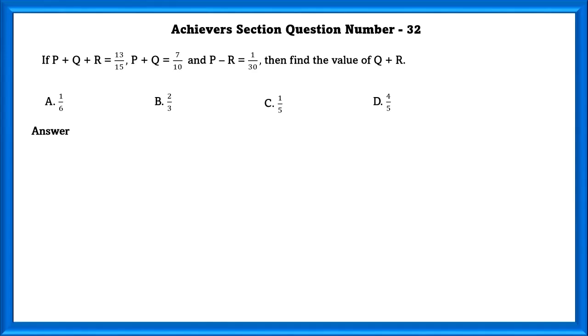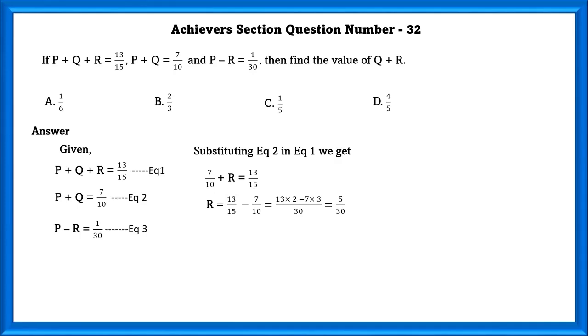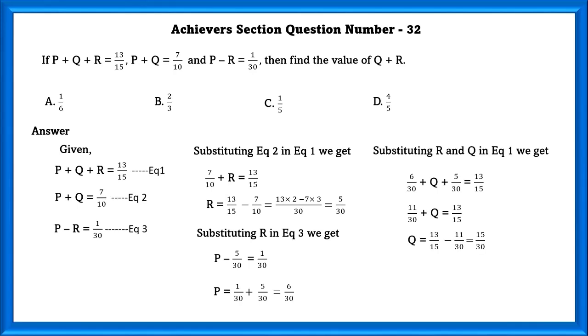Achievers section question number 32. If P plus Q plus R is equal to 13 by 15, P plus Q is equal to 7 by 10 and P minus R is equal to 1 by 30, then find the value of Q plus R. And guys, if you want to know more about fractions and decimals, you can check out our other video about fractions and decimals. I will link it in the description below and make sure to check it out. Now, back to the question. Given P plus Q plus R is equal to 13 by 15, that is equation 1. P plus Q is equal to 7 by 10, which is equal to equation 2. P minus R is equal to 1 by 30, that is equation 3. Substituting the value of equation 2 in equation 1, we can get the value of R, that is 5 by 30. Using this, we can substitute the value of R in equation 3 and we can get P, that is equal to 6 by 30. Substituting R and Q in equation 1, we get the value of Q, which is equal to 15 by 30. So Q plus R is equal to 2 by 3.